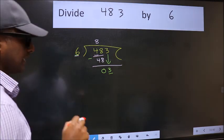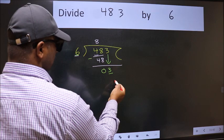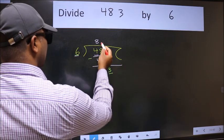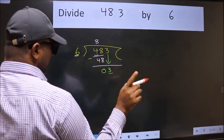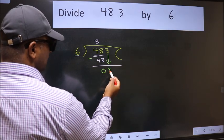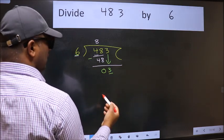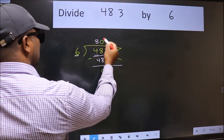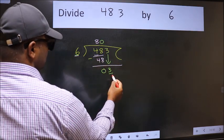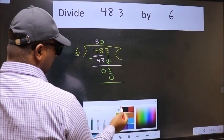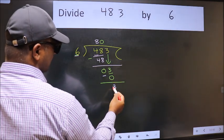Instead of that, what you should think of doing is which number should we take here. If I take 1, we will get 6, but 6 is larger than 3. So what we do is we take 0. So 6 into 0. Now we subtract. We get 3.